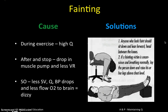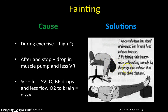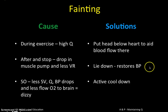To deal with dizziness or fainting, you try to get the head lower — raise someone's feet to use gravity to help blood return to the heart and brain, or drop the head below the heart so the brain receives oxygen. Head below heart aids blood flow; lying down helps restore blood pressure. Ideally, do an active cool down to prevent this situation from arising.